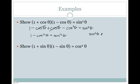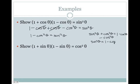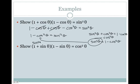Now we use the identity sine squared theta plus cosine squared theta equals 1. If we subtract cosine squared theta from both sides, we get sine squared theta equals 1 minus cosine squared theta. We have exactly that on our left side, so we can substitute sine squared theta in for 1 minus cosine squared theta. We end up with sine squared theta equals sine squared theta — shown.